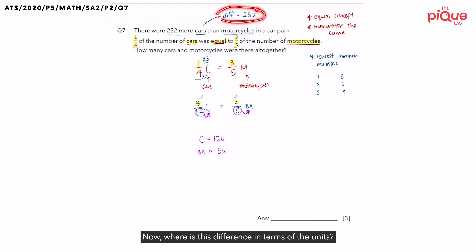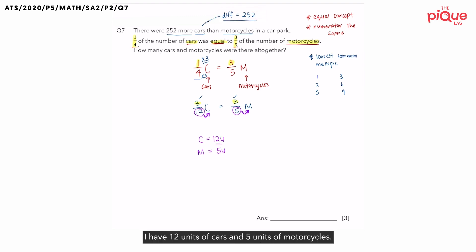Now, where is this difference in terms of the units? If you look at my units, I have 12 units of cars and 5 units of motorcycles. What is the difference in terms of units? The difference is equals to 12 units minus 5 units, which is, yes, if you have gotten 7 units, you are correct. Okay? So, these 7 units corresponds to the 252 more cars than motorcycles.